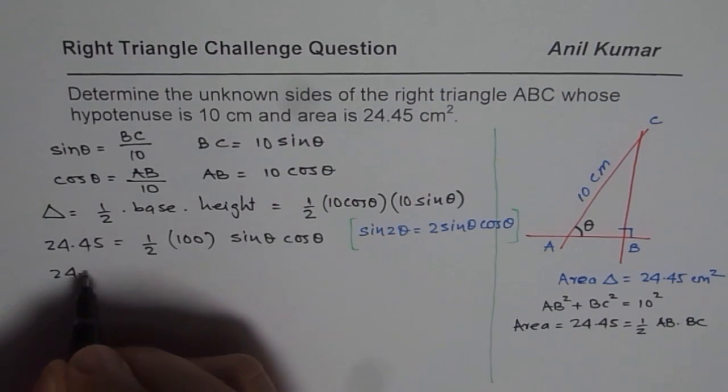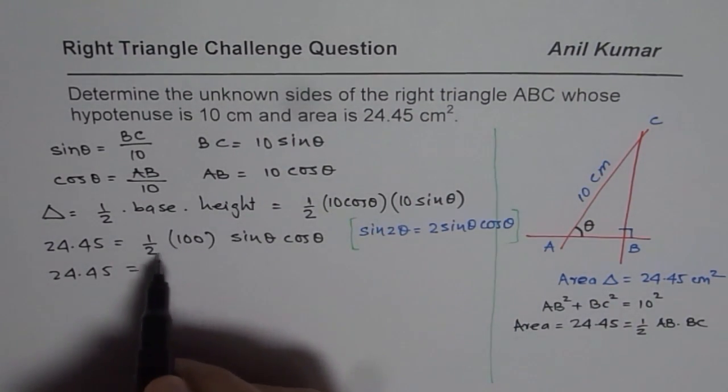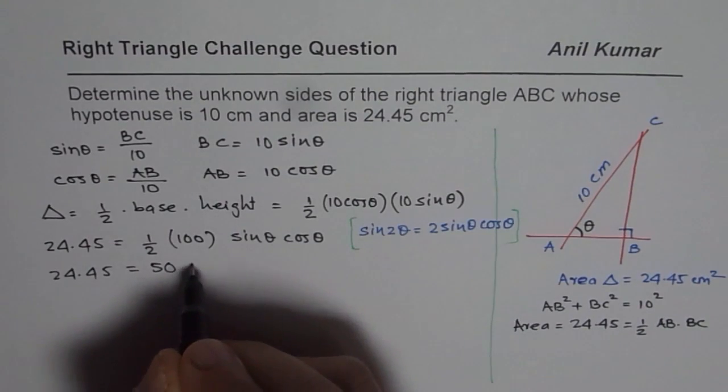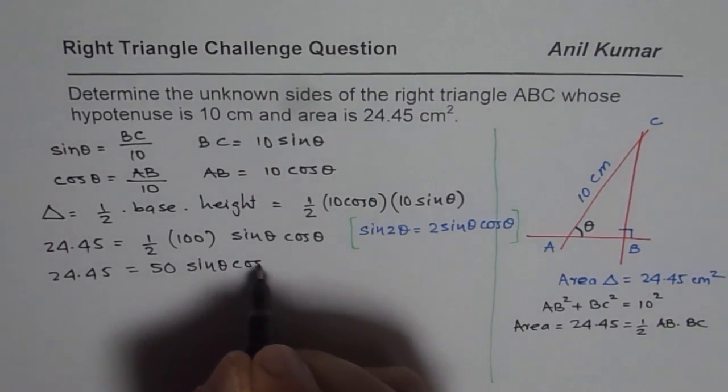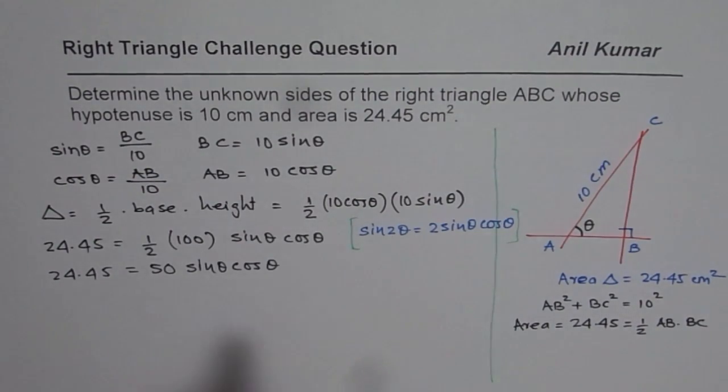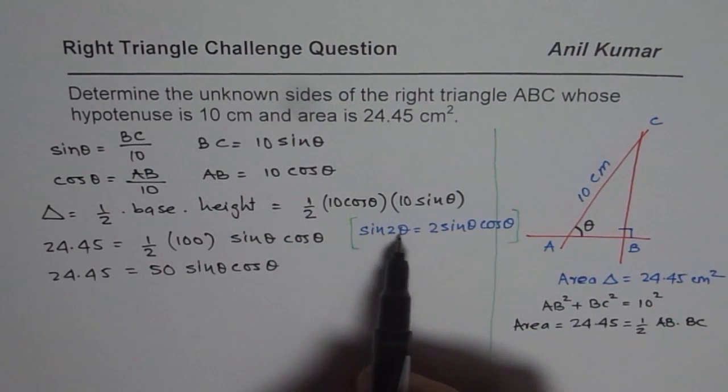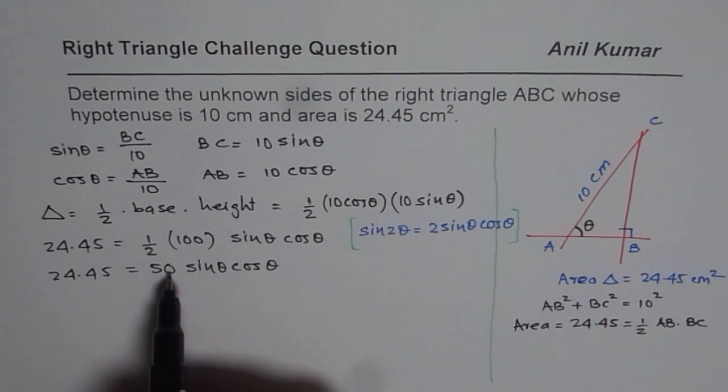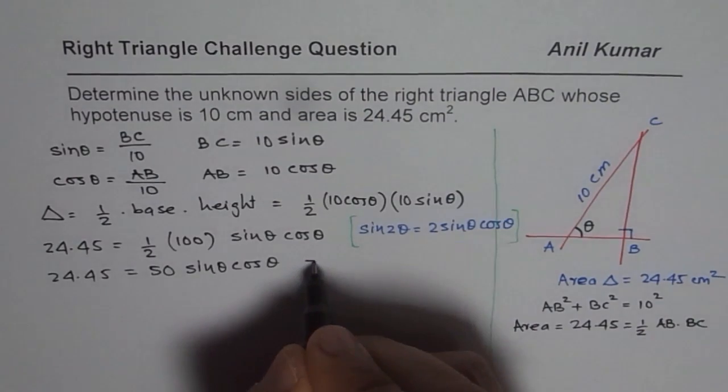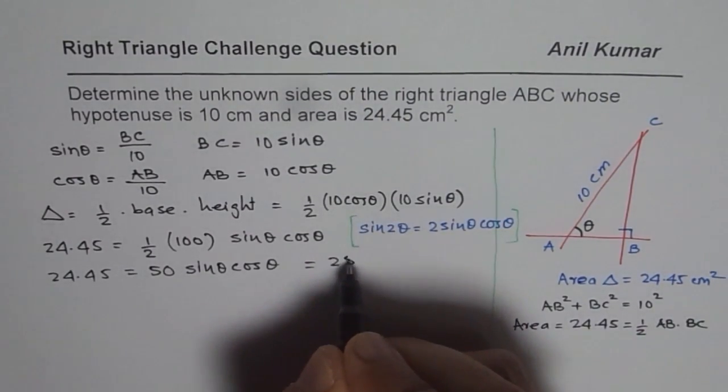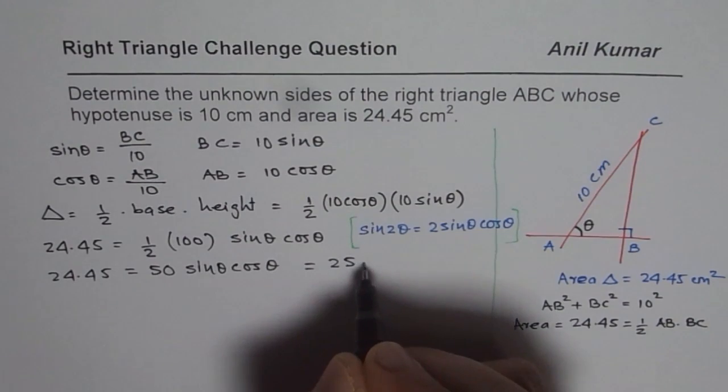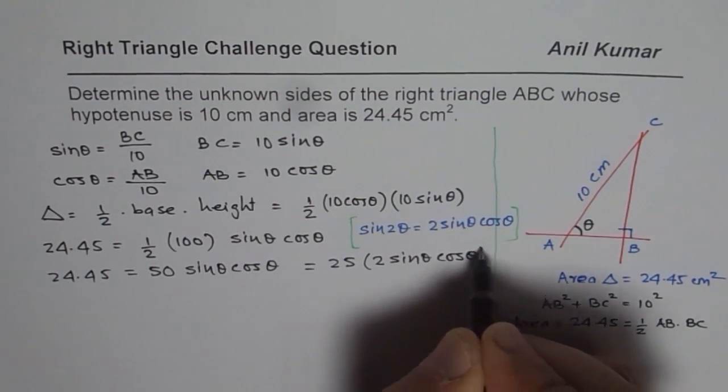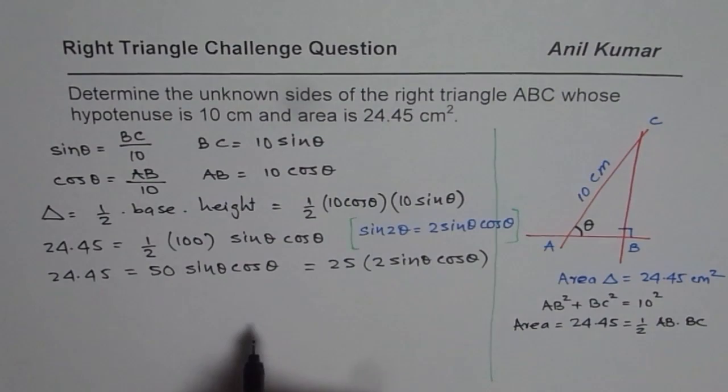So we have 24.45. If I divide this by 2, I will get 50, right? So we have 50, sin theta, cos theta. Since 2 sin theta, cos theta is sin 2 theta, I will write this as 25 times 2, right? So I could write this as 25. So let me write first 25 times 2. Sin theta, cos theta. As I've seen sometimes, students get confused here.